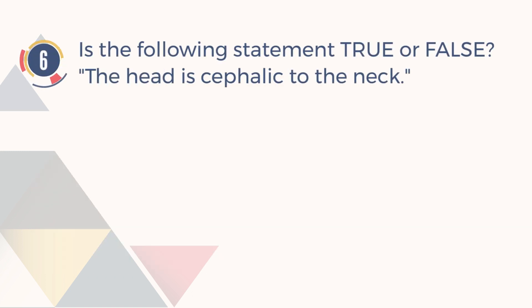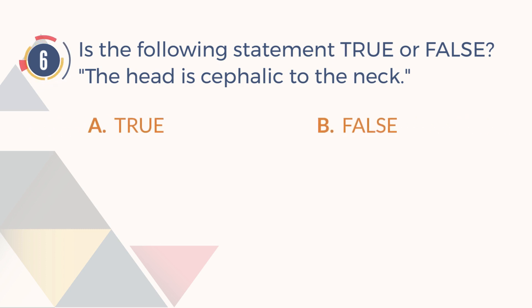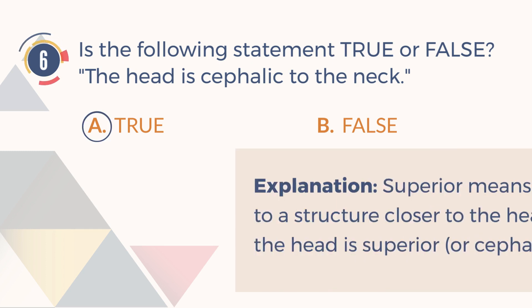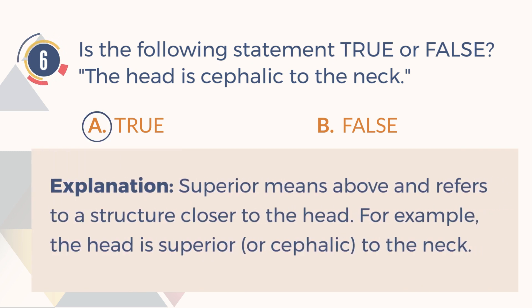Number 6. Is the following statement true or false? The head is cephalic to the neck. A. True. B. False. The answer is A. True. Explanation: Superior means above and refers to a structure closer to the head. For example, the head is superior, or cephalic, to the neck.